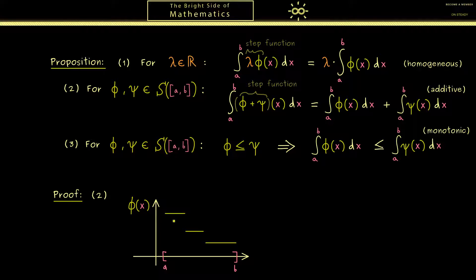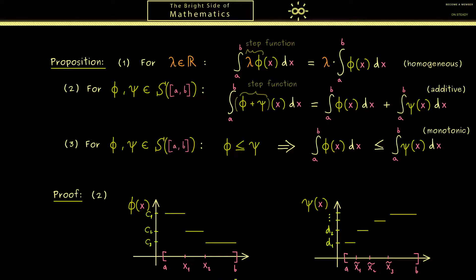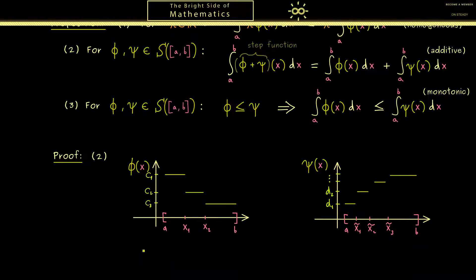For example this could be the graph of the step function phi, which means as always we are able to choose a partition x0, x1 and so on and numbers c1, c2 and so on. Now a similar visualization I can also give you for the step function psi. For example it could look like this. Hence also here as always we can choose a partition but now we use the letters x-tildes for this. And on the y-axis I would use d1, d2 and so on.